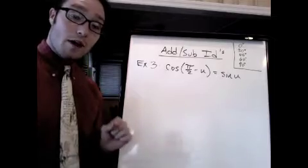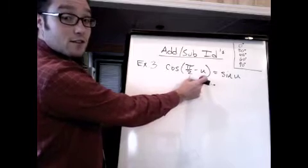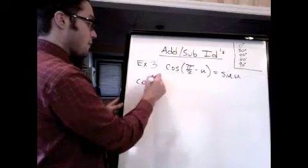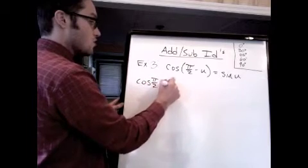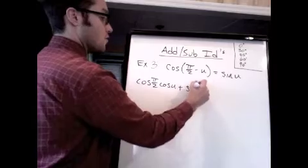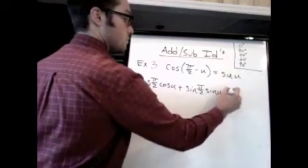So I need to go to my cheat sheet of trig identities and look up what's the identity for cosine of a difference. Cosine of subtraction. So if you look that up you get cosine pi over 2 times cosine u plus sine pi over 2 sine u.